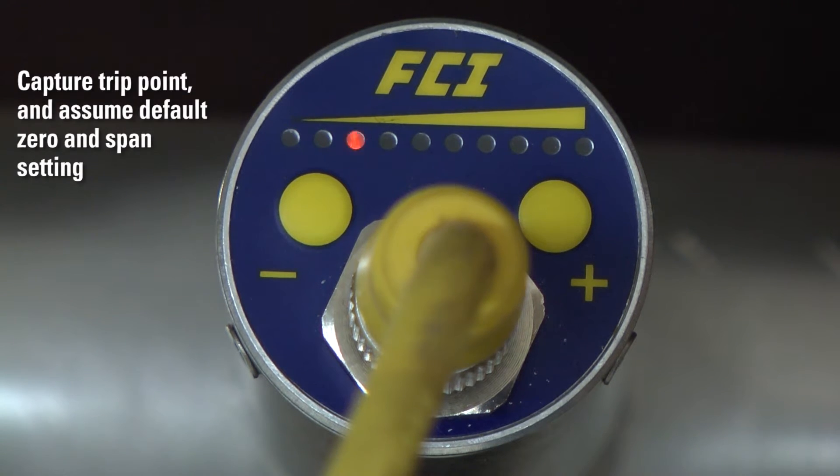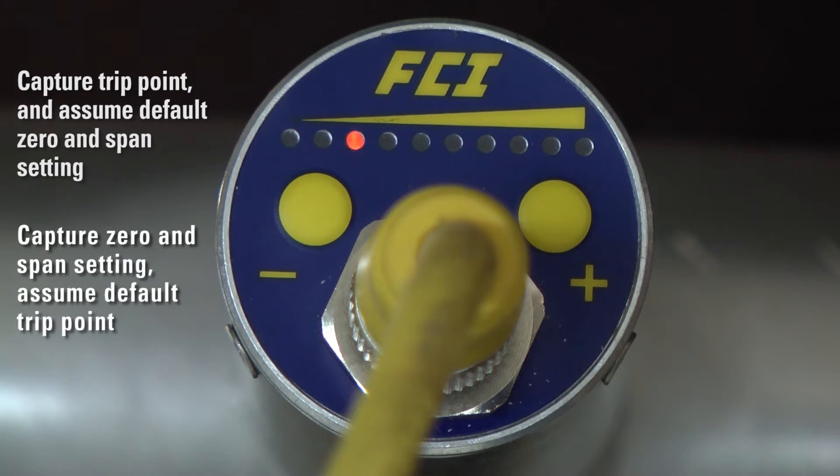Mode 1: capture a trip point and assume a default zero and span setting. Mode 2: capture the zero and span setting and assume the default trip point.